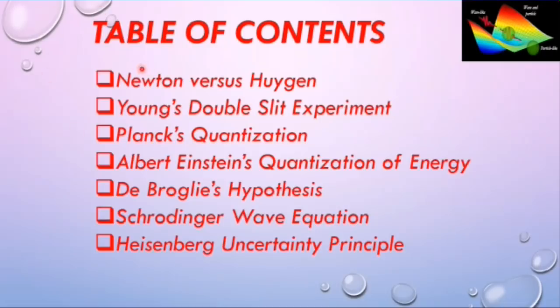Table of contents: Newton versus Huygens, Young's double slit experiment, Planck's quantization, Albert Einstein's quantization of energy, de Broglie's hypothesis, Schrödinger wave equation, and Heisenberg uncertainty principle.